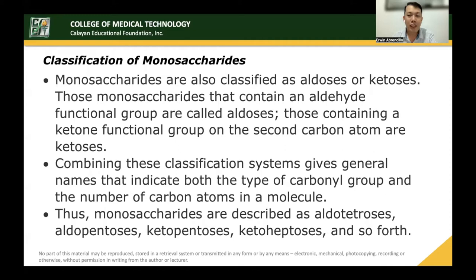Monosaccharides are also classified as ketoses or aldoses. If the monosaccharide has an aldehyde, it is an aldose; if it has a ketone, then it is a ketose. Those containing an aldehyde functional group are called aldoses, and those containing a ketone functional group on the second carbon are ketoses. Combining these classification systems gives general names indicating both the type of carbonyl group and the number of carbon atoms. For example, aldotetrose means an aldehyde sugar with 4 carbons.